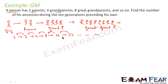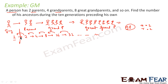Every number is double, so this is a GP where a = 1 and r = 2. Now what the question asks: find the number of ancestors during the 10th generation. Ancestors start from the parents position, because the person himself is not an ancestor. So the relevant GP starting from parents is: 2, 4, 8, 16, 32...